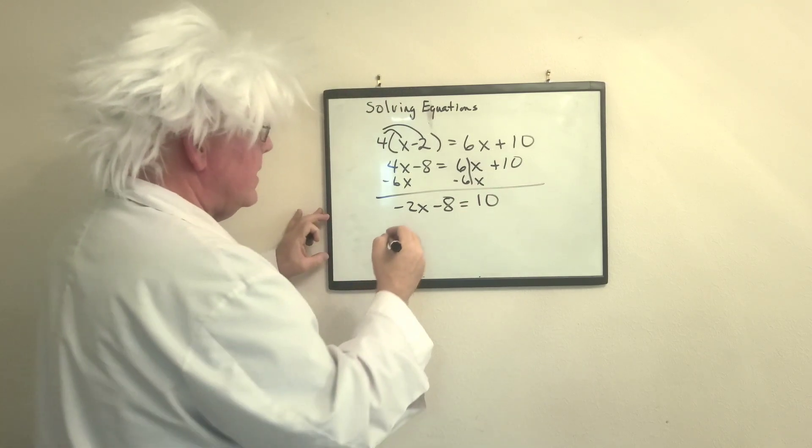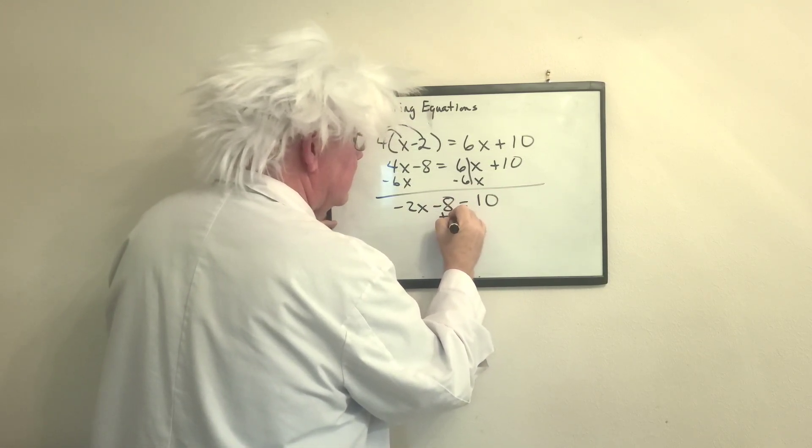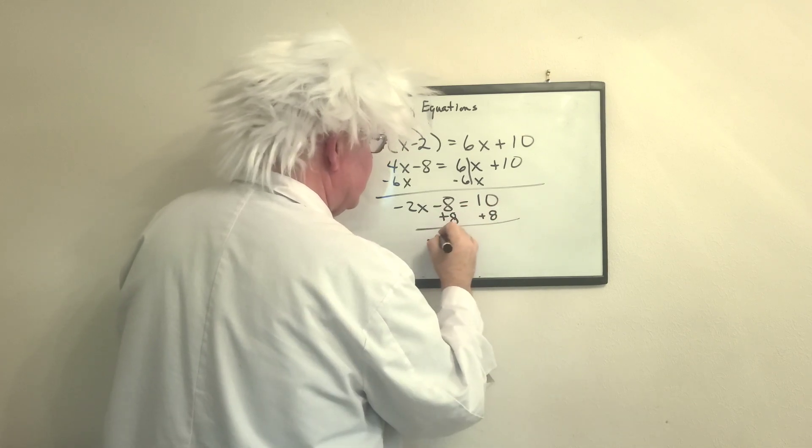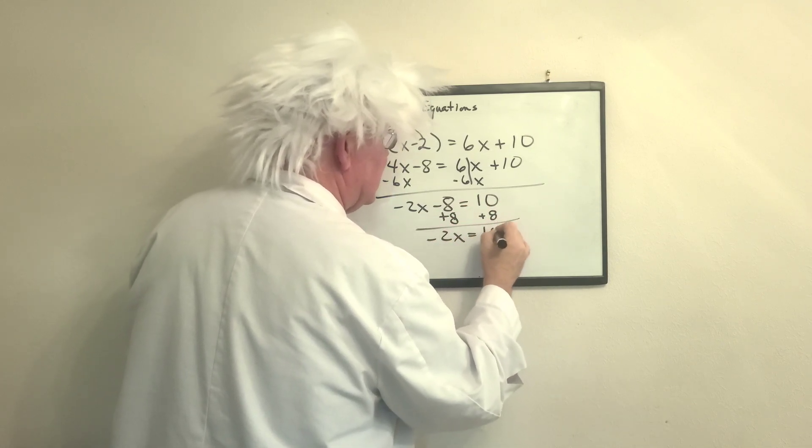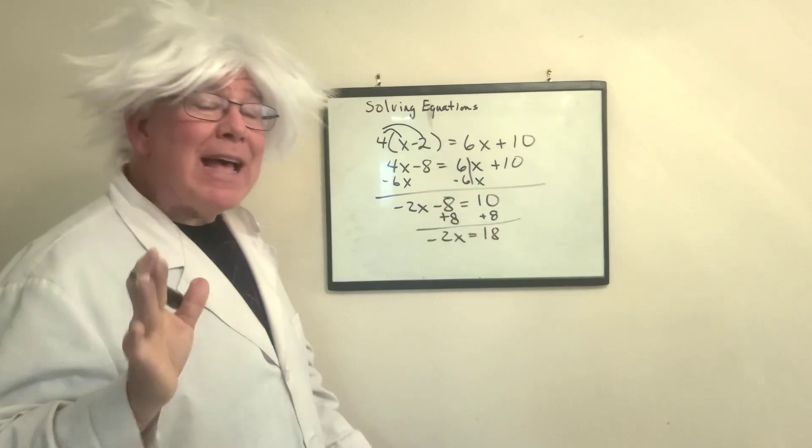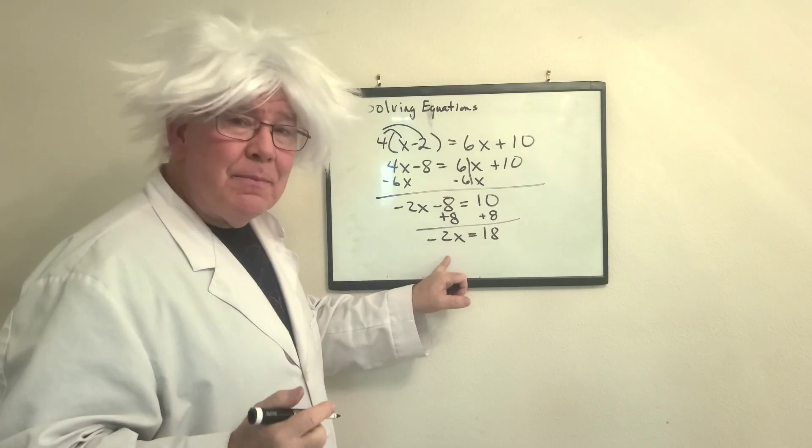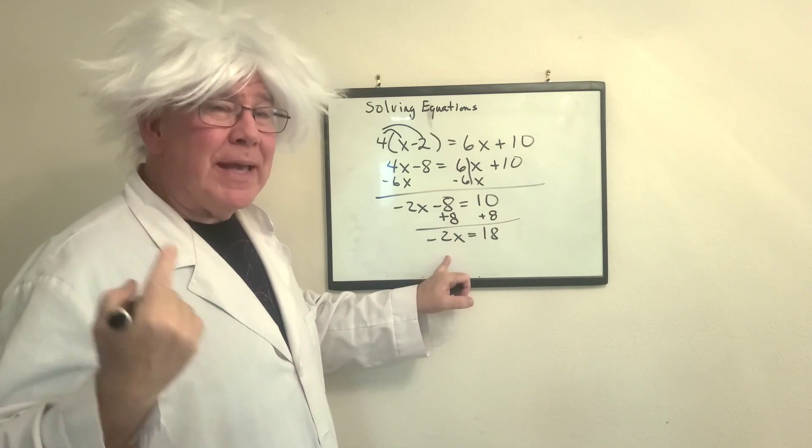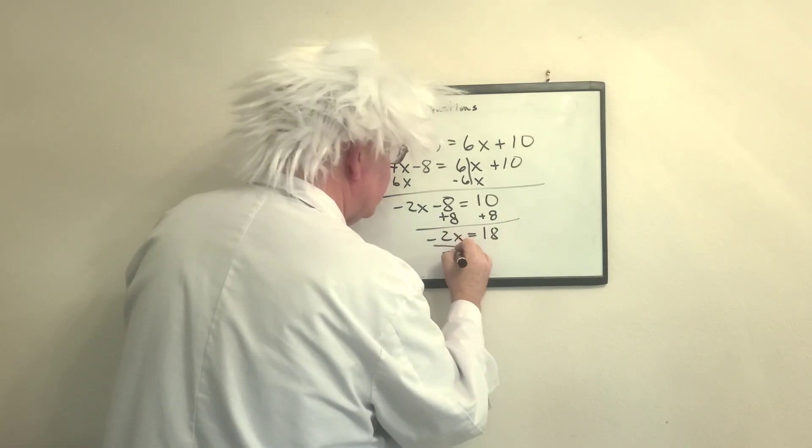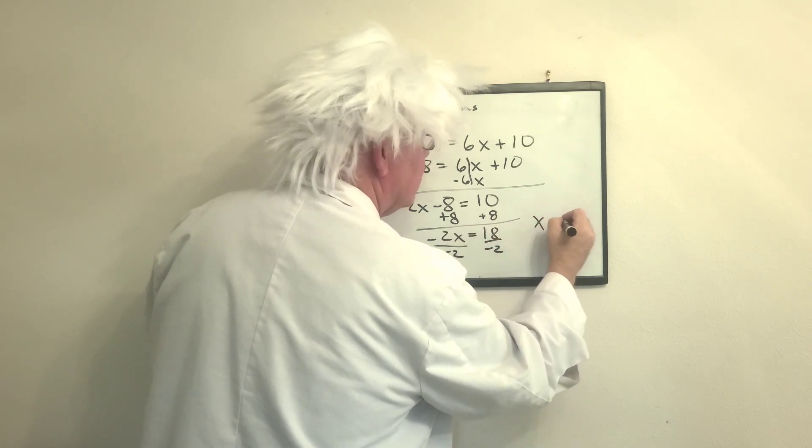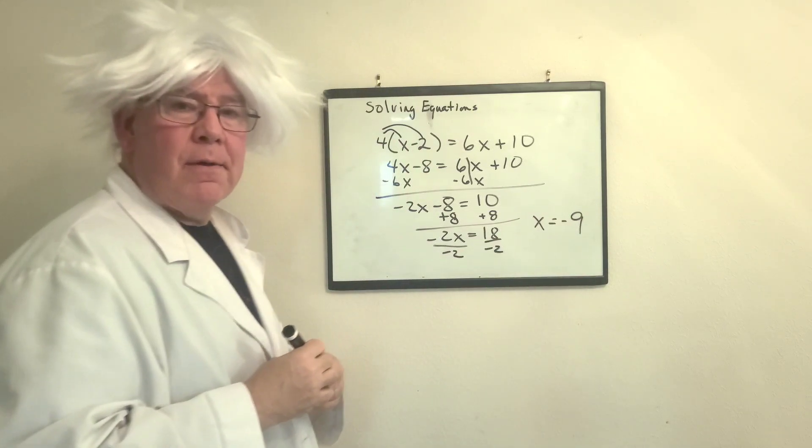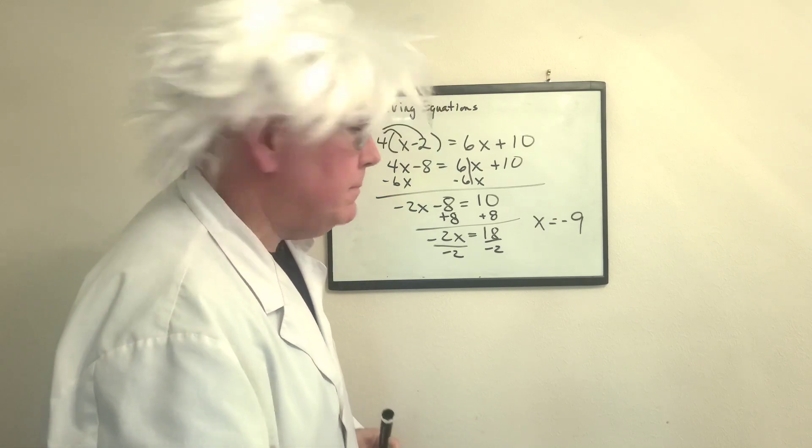Next step is we're going to add 8 to both sides, and that gives me negative 2x equals 18. Now, last but not least, we're connected by, now listen, we're not connected by subtraction, we're connected by multiplication. So, we're going to divide both sides by negative 2, and x equals negative 9, right? One more, and then we'll be done, okay?